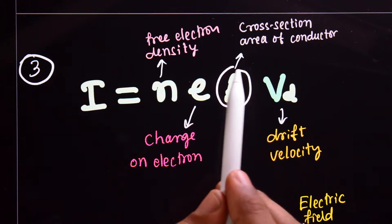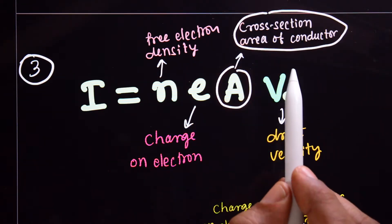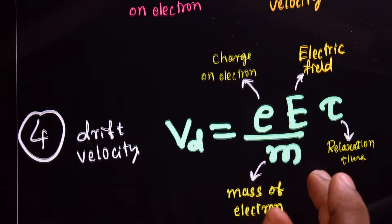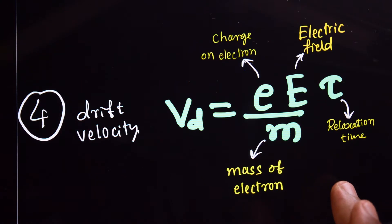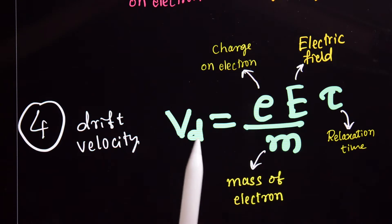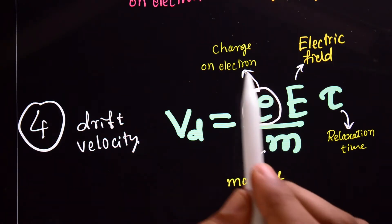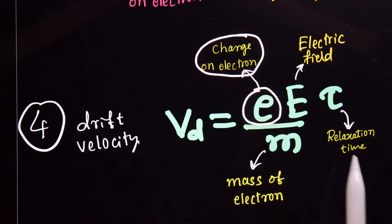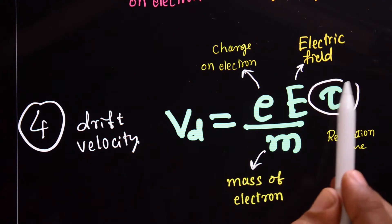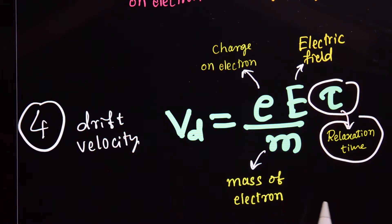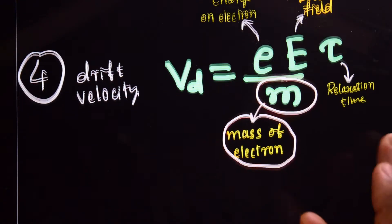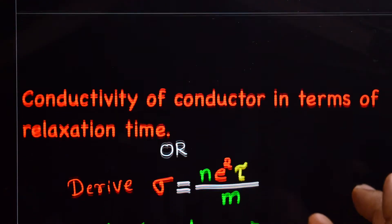Third, the relation between current and drift velocity: I equals n·e·A·v_d, where n is the free electron density, e is the charge on the electron, A is the cross-sectional area, and v_d is the drift velocity. Fourth, the drift velocity formula: v_d equals e·E·τ divided by m, where E is the electric field, τ is the relaxation time, and m is the mass of the electron.